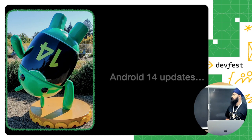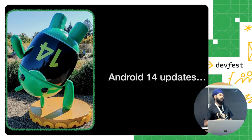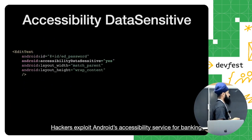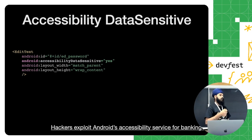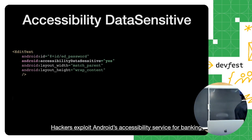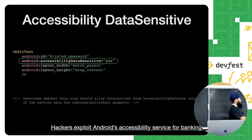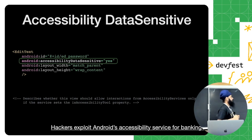Now Android 14 — it just recently launched and there are a couple of new APIs. The first is data sensitive, which is really interesting. Hackers have been using accessibility services to actually hack banking applications by performing actions on them. The system now provides a new API: accessibility data sensitive. If you set this property on a view to 'yes,' that view should only allow interactions from accessibility services verified by the Play Store. When we submit our application, if we provide any accessibility services, it checks if the service sets the accessibility tool property — if not, the application may be rejected, providing more protection from these attacks.